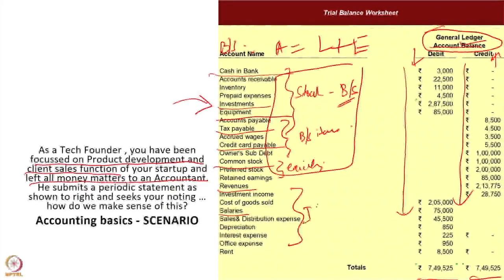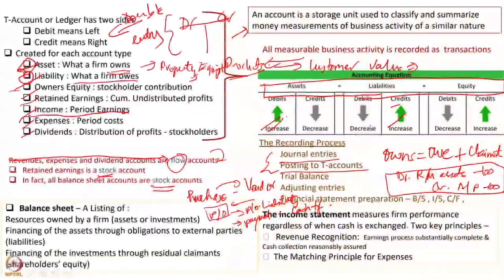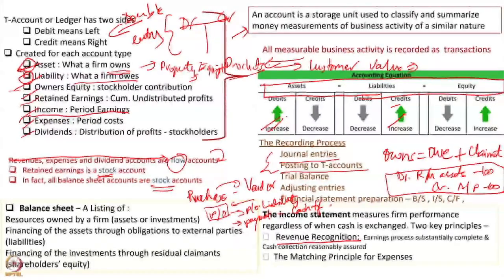These are the income statement accounting concepts. The accounting concepts — primarily the most important, of which there are about eight to nine — are the conventions by which all statements are made. The most important concept governing the income statement is when we recognize revenue: revenue recognition. There are two key principles here. The first: when the earnings process is substantially completed and the cash collection is reasonably assured, then we can recognize revenue. This is a very important concept in the context of Indian startups.